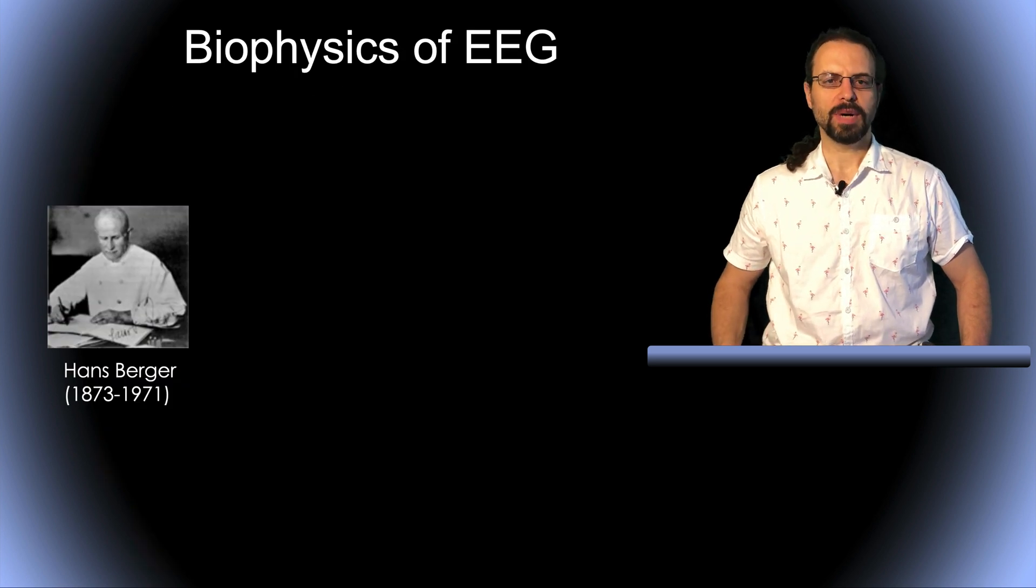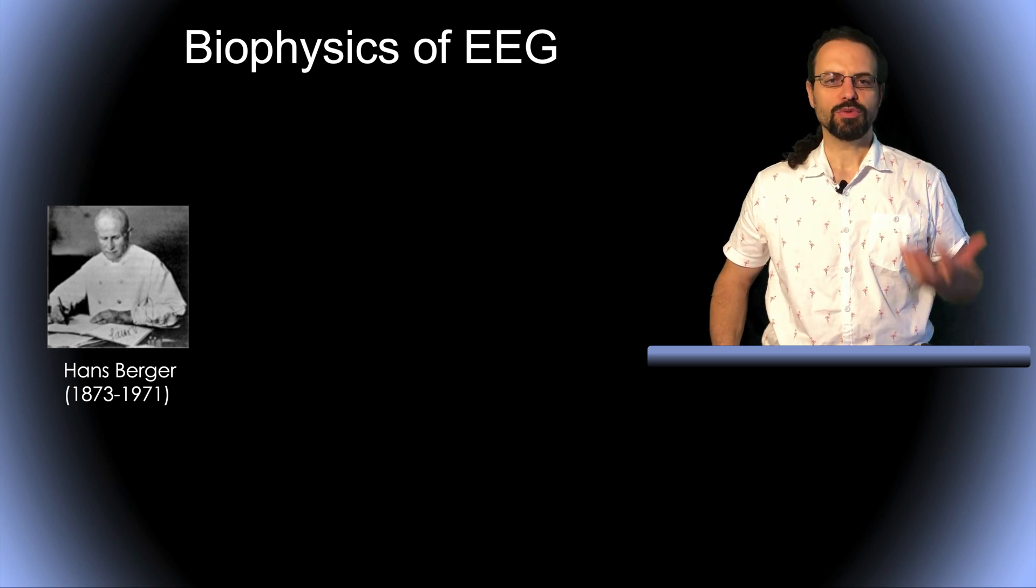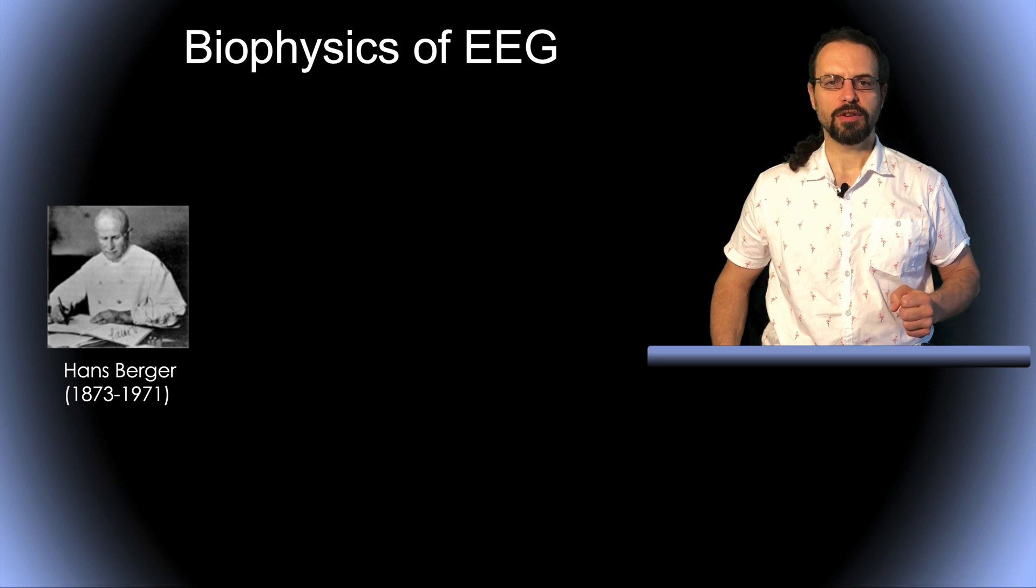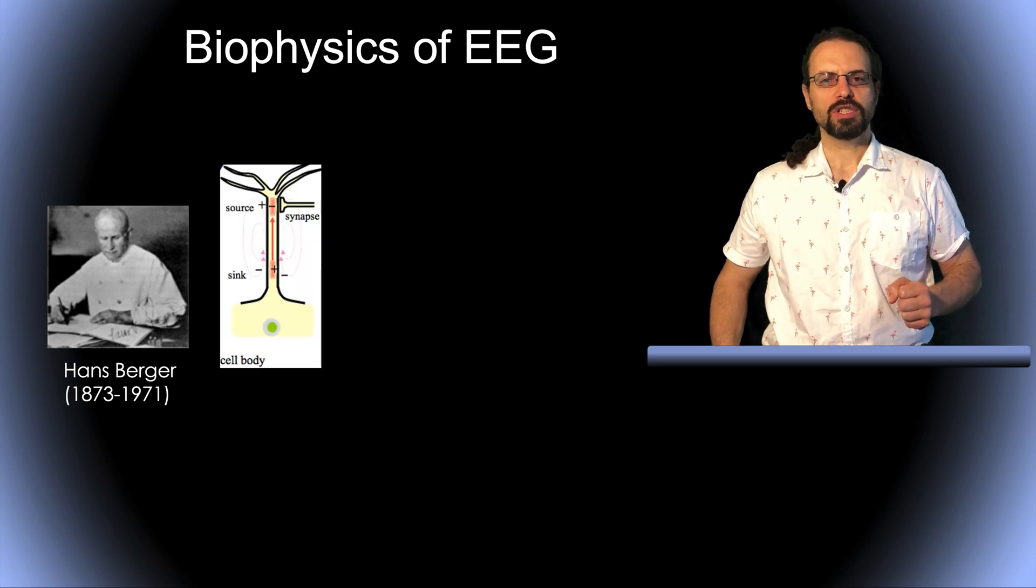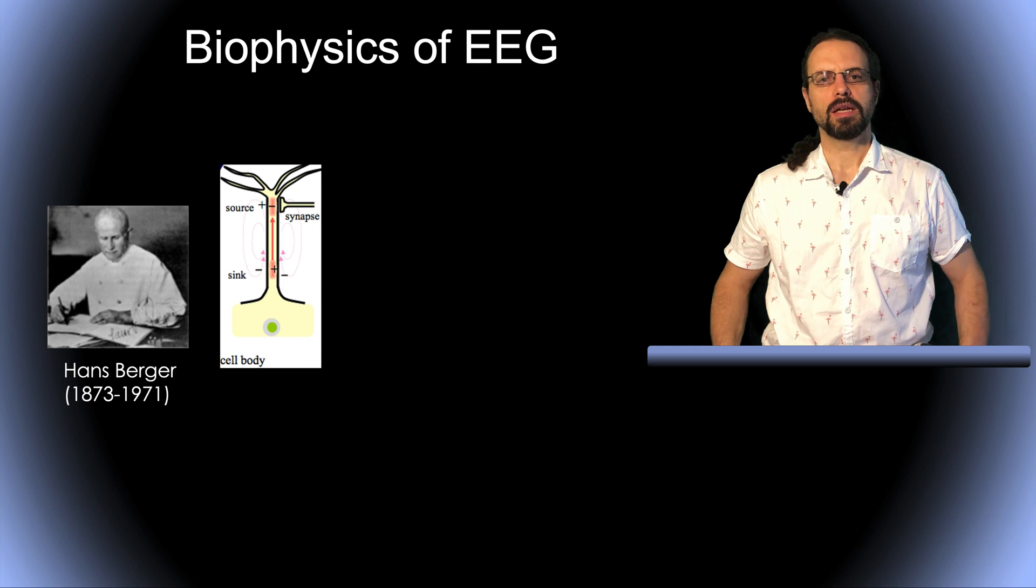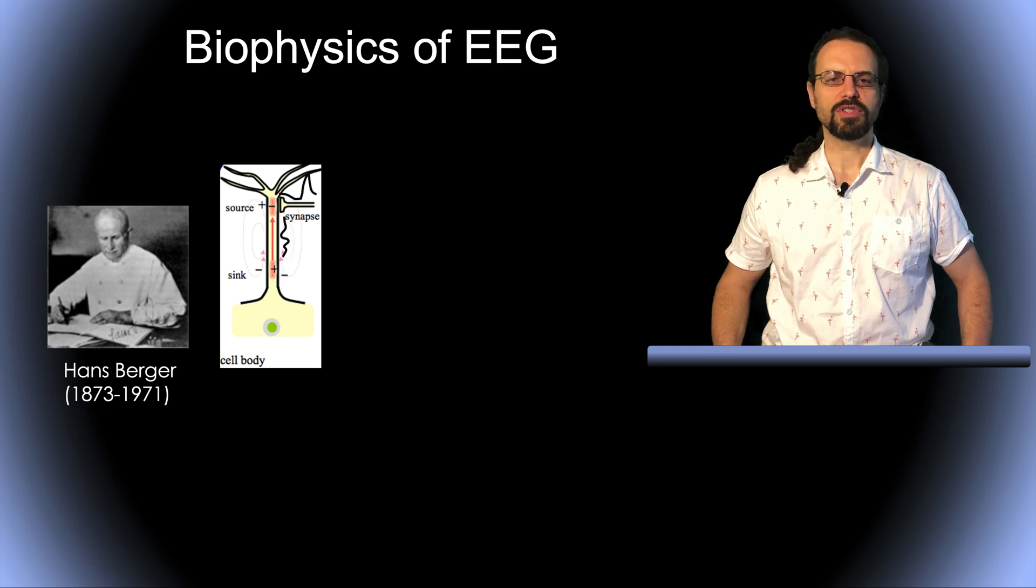So let's first talk about the biophysics of the EEG signal. EEG was first discovered by Hans Berger. In 1924, he defined the EEG alpha rhythm. Here is a neuron. On top are the dendrites. On the bottom is the cell body. The dendrites integrate the electrical signal and transfer it to the cell body.